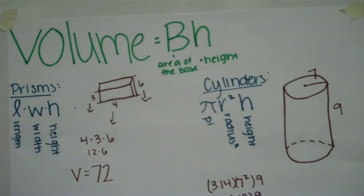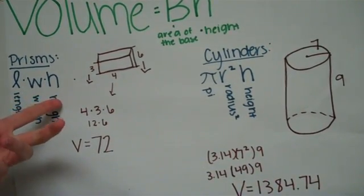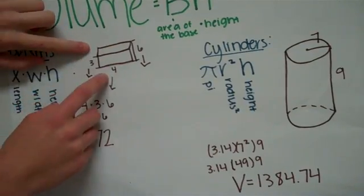So for prisms, you would have length times your width times the height. And remember, height is the distance between the two bases.